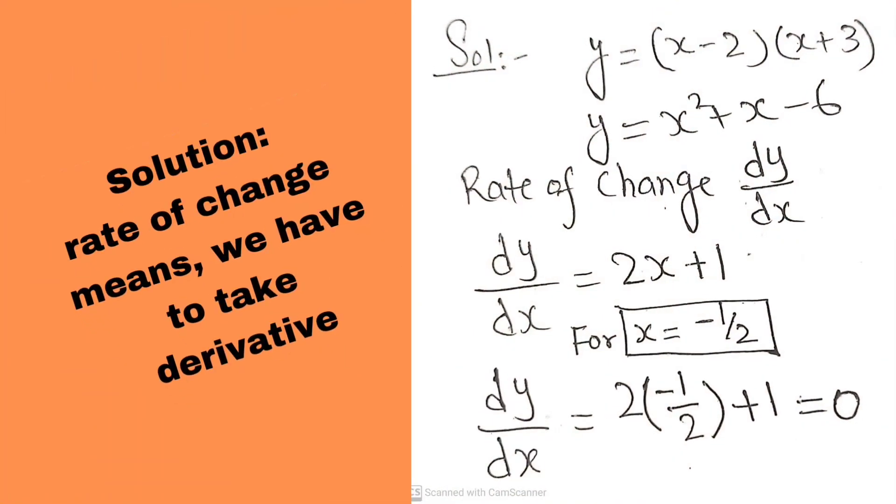Rate of change means we have to take the derivative. So first we multiply both the expressions (x - 2) and (x + 3). After that we take the derivative: the derivative is 2x + 1. We put the given values one by one and found that at x = -1/2, the derivative, the rate of change, is 0.